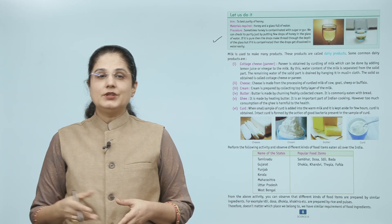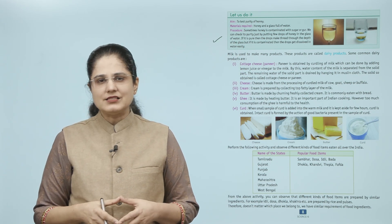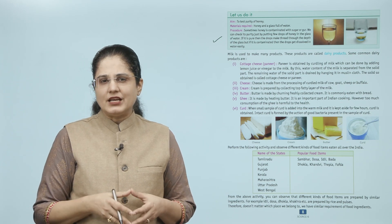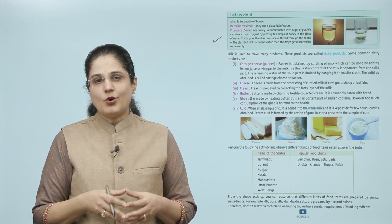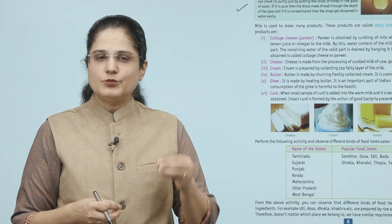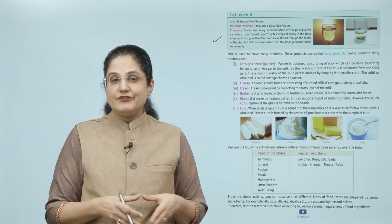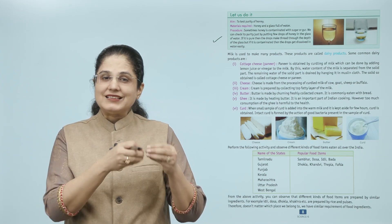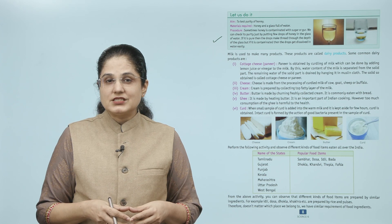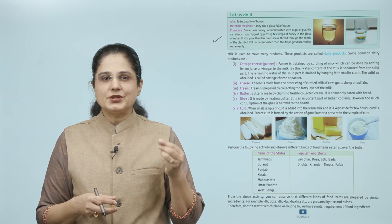Activity: aim — to test the purity of honey. Materials required: honey and a glass full of water. Procedure: sometimes honey is contaminated with sugar syrup. We can check its purity just by putting a few drops of honey in a glass of water. If it is pure, then the drops make a thread through the depth of the glass. But if it is contaminated, the drops get dissolved in water easily.